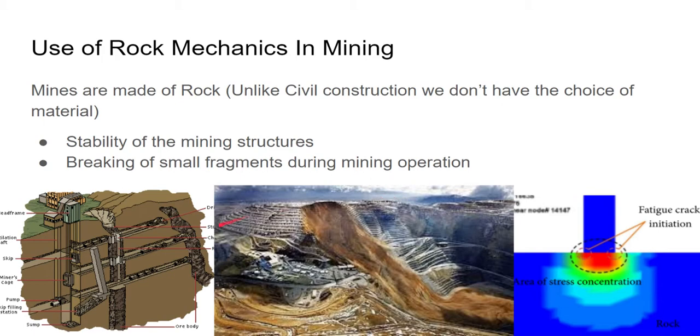In case of underground mines, we excavate openings in the underground strata to reach our minerals, and in case of surface mines we dig somewhat conical shaped holes in the surface to reach our ore bodies.